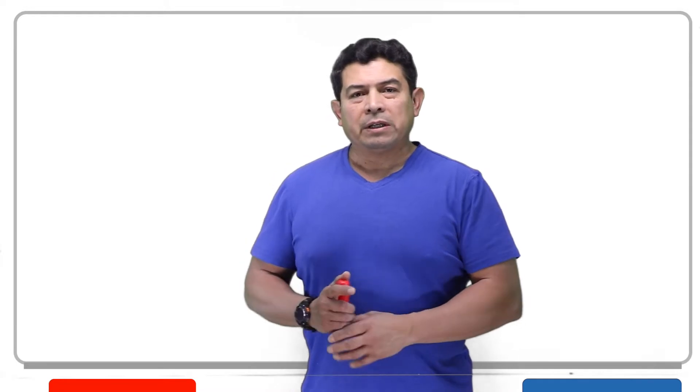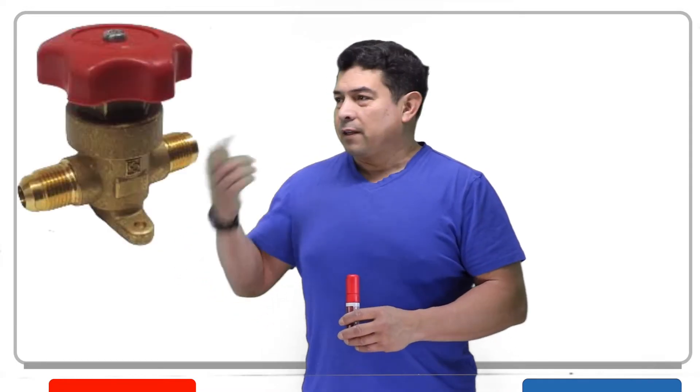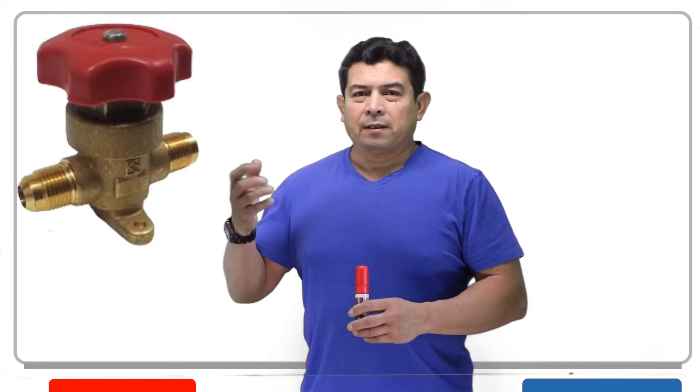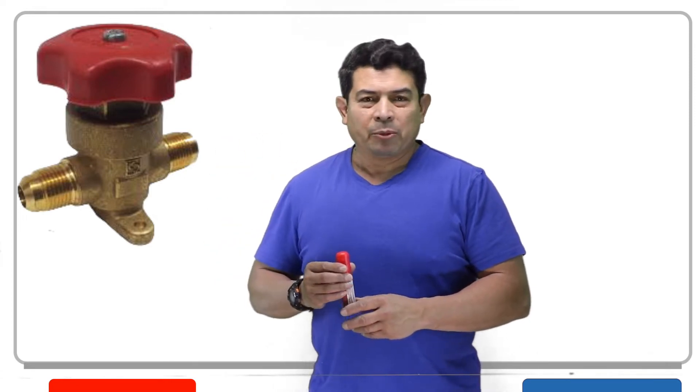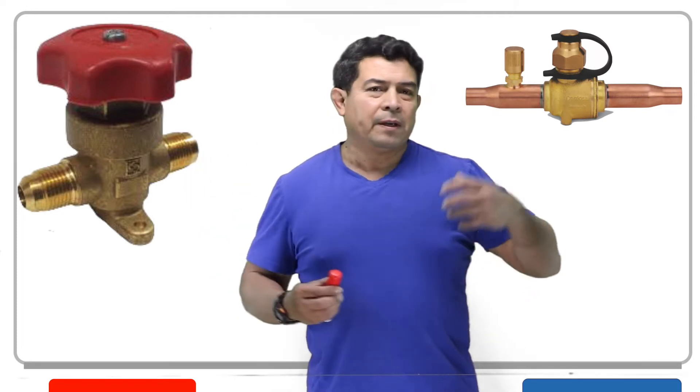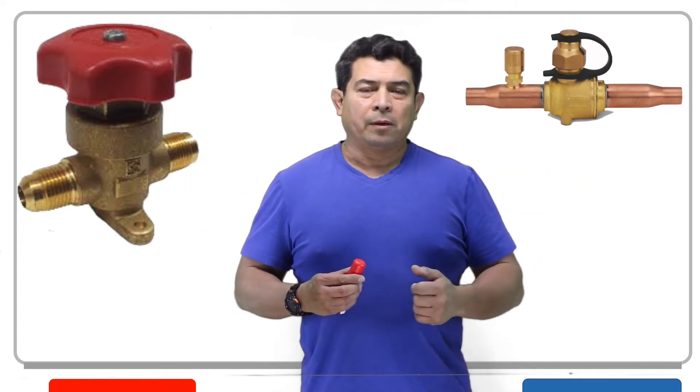Mainly two valves. One is going to be the diaphragm valve. It's got diaphragms in it and we'll get to that in a minute. But then the other one is going to be the ball valve. So we have the diaphragm and the ball valve that we're going to talk about.